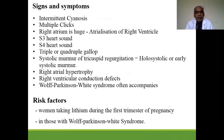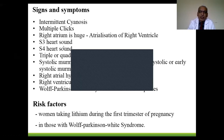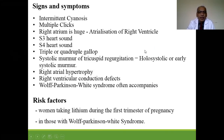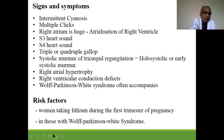The child has intermittent cyanosis, multiple clicks, a huge right atrium, audible third and fourth heart sounds, gallop rhythm, systolic murmur of tricuspid regurgitation, right atrial hypertrophy, right ventricular conduction defect, and WPW syndrome can also occur.